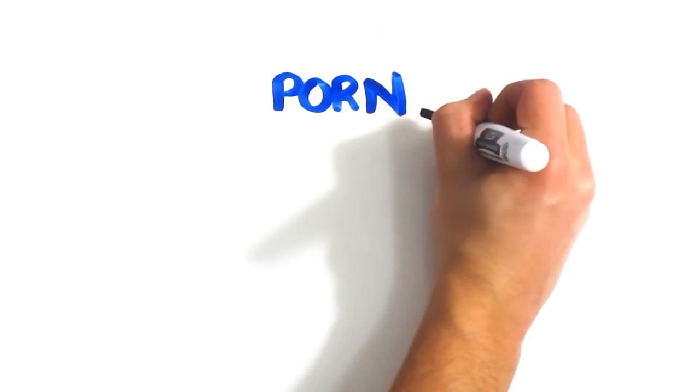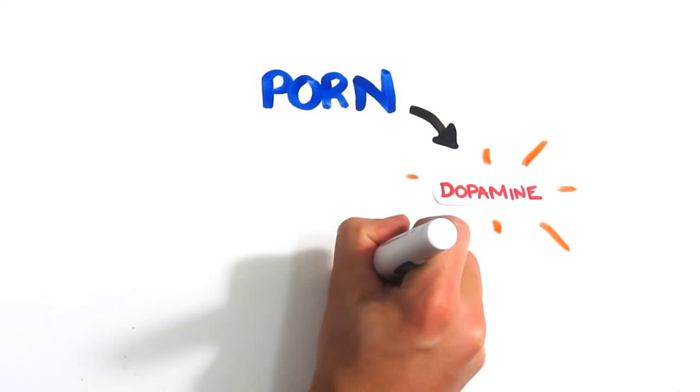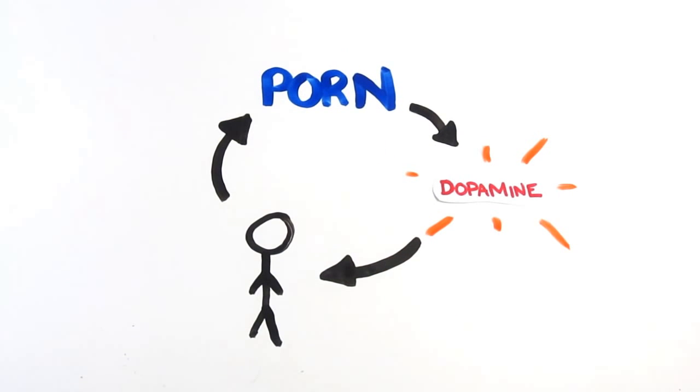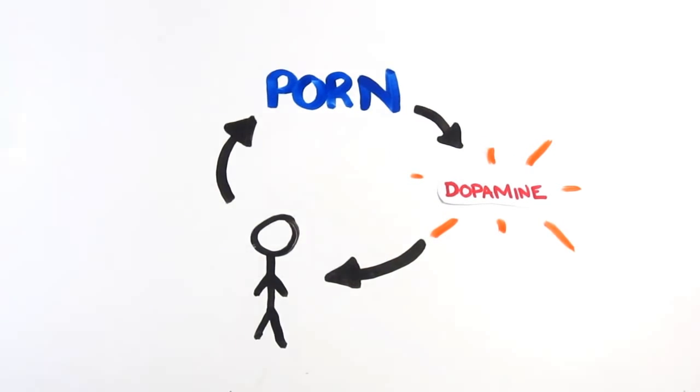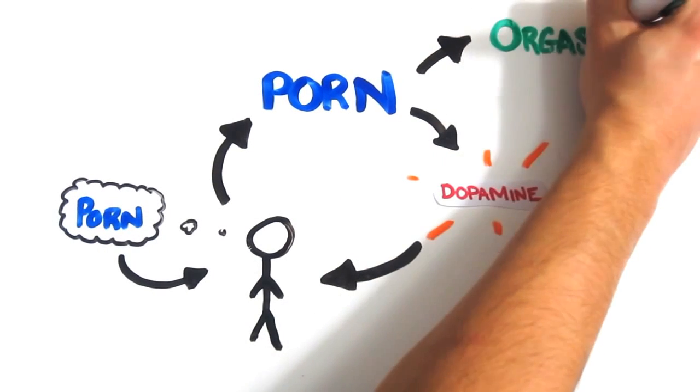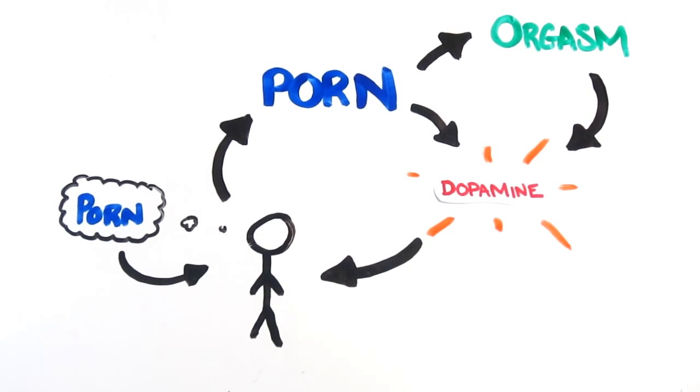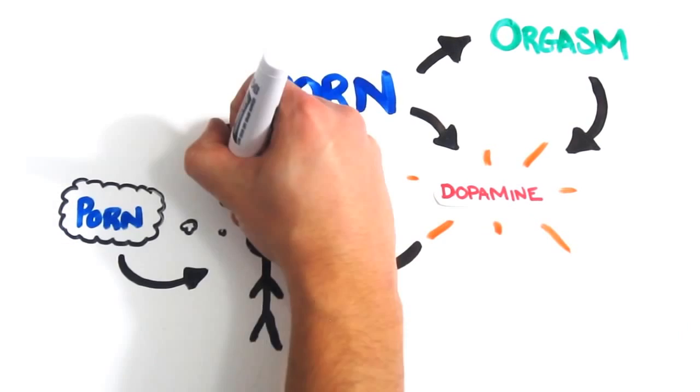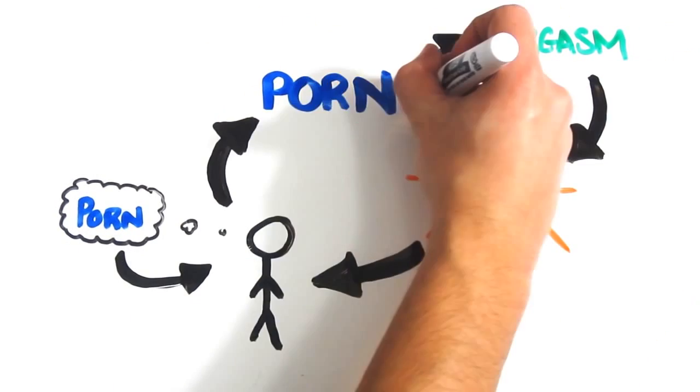The more time you spend doing it, the more dopamine gets released, which reinforces the behavior and makes you not only desire it in the future, but require it. And as you begin to imagine these images away from the computer or while having sex, they become reinforced. Furthermore, each orgasm releases even more dopamine, which consolidates the connections made during the session. It's a feedback loop that becomes harder to escape.